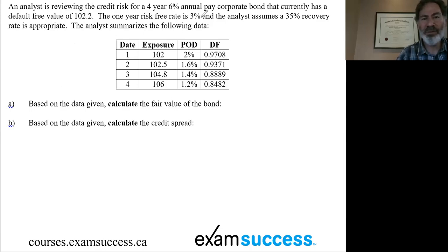That's the value for the risk-free bond. Now, a one-year risk-free rate is 3% and the analyst assumes a 35% recovery rate is appropriate. Summarizes the information here.